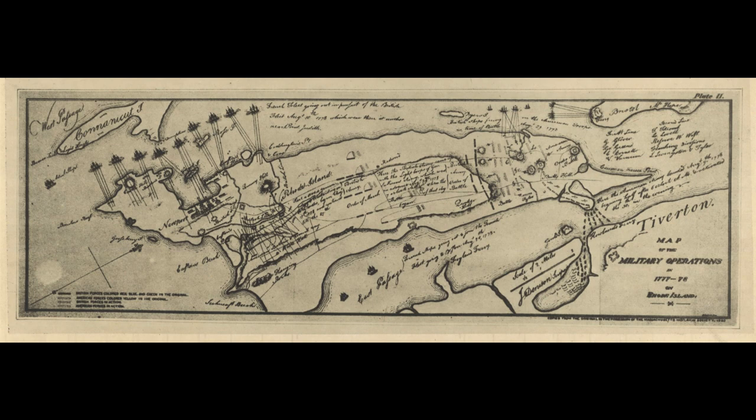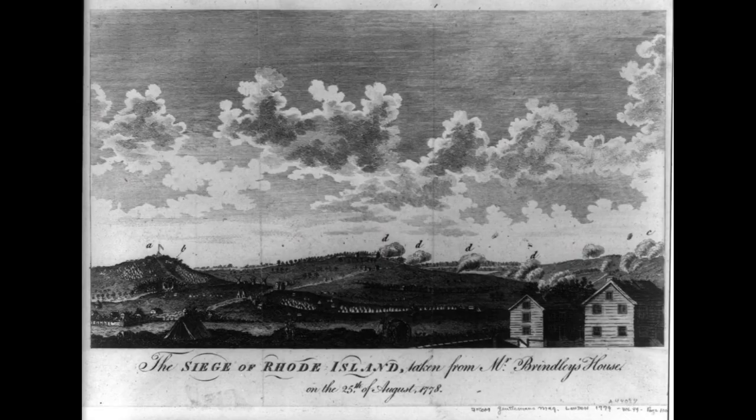The Battle of Rhode Island was the result of a larger military campaign aimed at reclaiming control of Newport and the surrounding area. The American forces, consisting of a mix of infantry, artillery, and naval units, had been assembled in response to a British threat to the region. The British and Hessian forces, on the other hand, were attempting to solidify their hold on the area, which they had recently occupied.